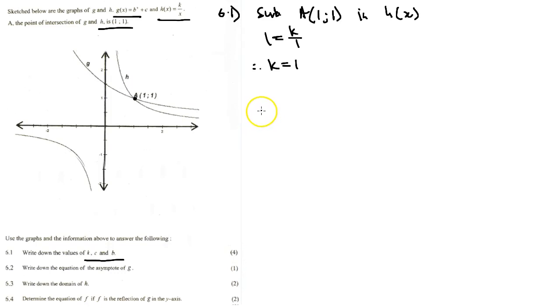For g(x) equals b to the x plus c, if we substitute (1,1) we're going to still have two unknowns which will be b and c.